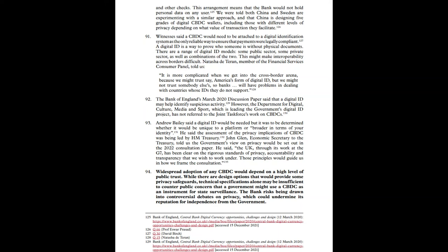We were told both China and Sweden are experimenting with a similar approach, and that China is designing five grades of digital CBDC wallets with different levels of privacy depending on the value of transactions they facilitate. Witnesses said a CBDC would need to be attached to a digital identification system as the only reliable way to ensure payments are legally compliant. A digital ID is a way to prove who someone is without physical documents. There are a range of digital ID models — some public sector, some private sector, and combinations of the two — which may make interoperability across borders difficult.